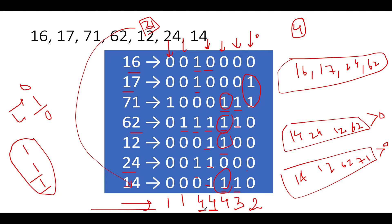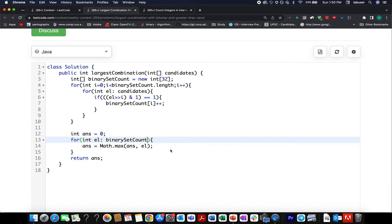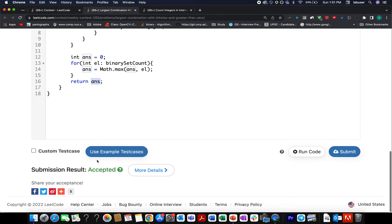Here, I've created the binary set count array, and the size of it is 32, because the binary representation starts from the 0th index up till the 31st index. I iterate over this input array, I iterate over my candidates that I have, I check whether the ith bit is set in the current candidate. If it is, then I increment the count of binary set count at the ith index. Once I'm done with this loop, I simply iterate over the binary set count array and identify the maximum value that exists over the entire array and that becomes the answer. So let's try this up.